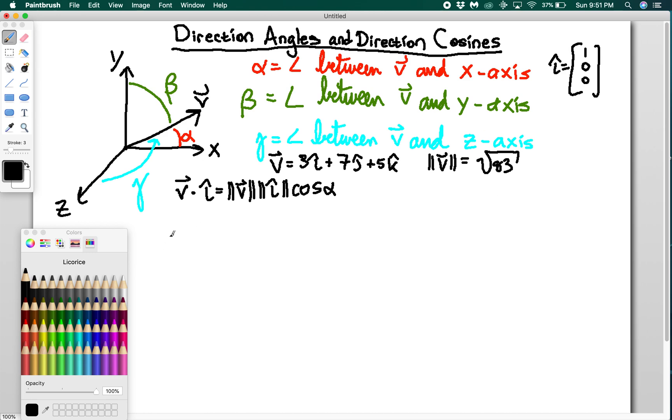So I'm going to have then that the cosine of alpha is equal to 3 over root 83. This is my direction cosine, one of my direction cosines. And this is also sometimes written as c1. So c1 equals this. And then we can get our direction angle alpha, which is going to be 70.77 degrees.